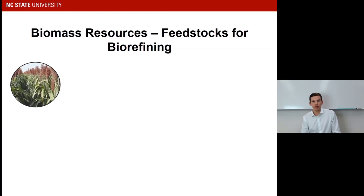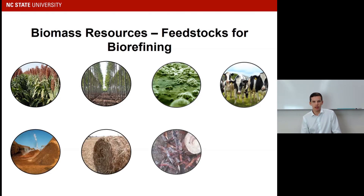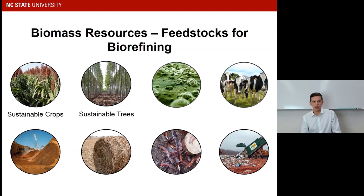Now I'm going to go into the different feedstocks used for bioproducts — the different types of biomass commonly used to make bioproducts. We have sustainable crops, which can be corn or sorghum, or even more sustainable crops like miscanthus and switchgrass, which have a lot of environmental benefits and are being looked at extensively in research. Next, we have sustainable trees. The southeastern US, where North Carolina is located, has vast forest lands and sustainable tree plantations maintained for the purpose of eventually selling the wood to make different bioproducts.